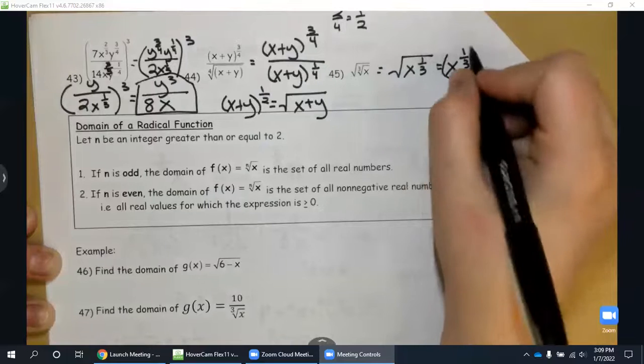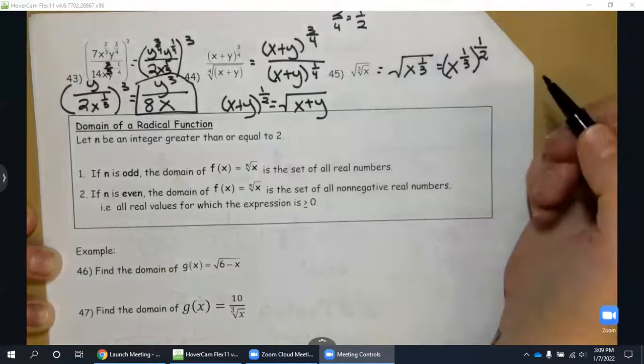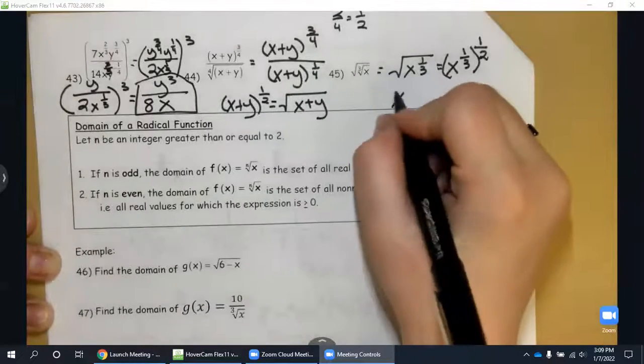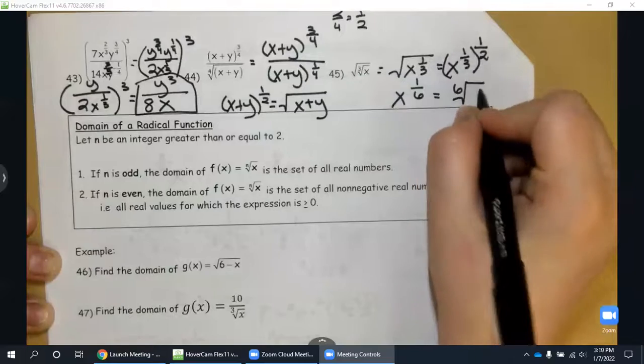So I'm multiplying these exponents. So one over three times one over two is going to give me x to the one-sixth power, which is also the sixth root of x.